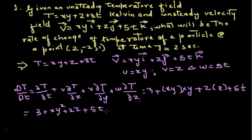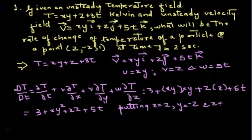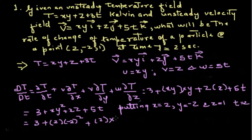Now we substitute the values at the point (2, -2, 1) at t = 2. Substituting: 3 + xy² = 3 + 2×(−2)² = 3 + 8; xz = 2×1 = 2; 5t = 5×2 = 10. Calculating this we get 23 Kelvin per second.